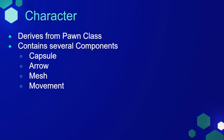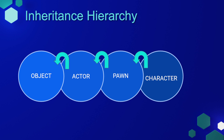A Character derives from a Pawn Class, and it contains several components: a capsule component, an arrow, a mesh, and a movement component. This chart talks about the hierarchy of inheritance, which we'll discuss again in a future lesson. We can see that Character inherits from Pawn, which inherits from Actor, which inherits from Object.